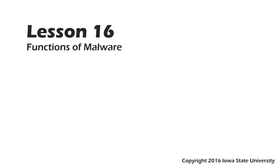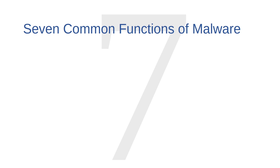In the previous video, I described four common kinds of malware: viruses, worms, Trojan horses, and bots. In this video, we're going to explore seven common functions of malware — some of the things that malware can do. Malware can have a practically infinite variety of negative effects on a computer or a network. The only limits are the creativity and ill will of the malware programmers. But we'll stick to just these seven functions for now.